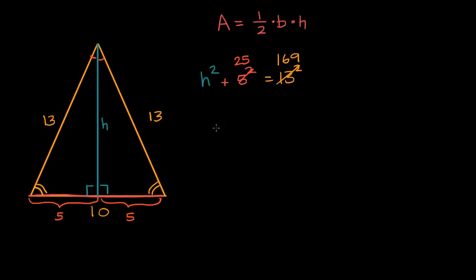We can subtract 25 from both sides to isolate the h squared. What are we left with? We are left with h squared is equal to 169 minus 25, which is 144.